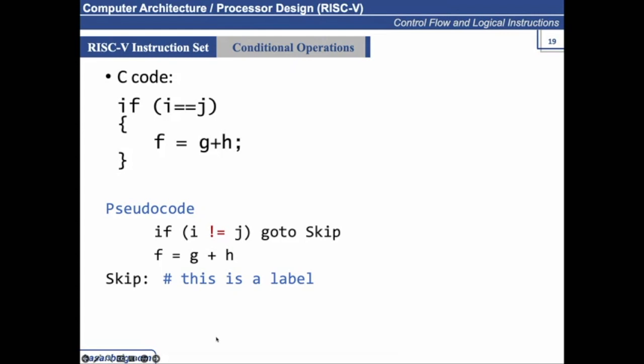Always remember: if you have a condition given like i == j, you convert it into i != j and write the code accordingly. And if you are given i != j, then check for i == j.